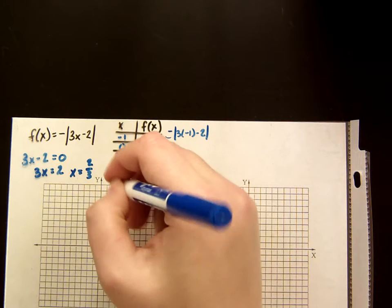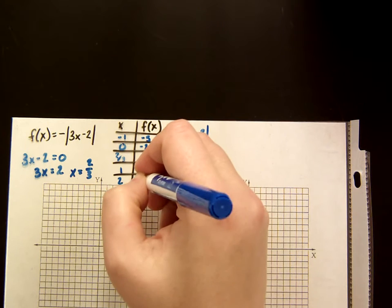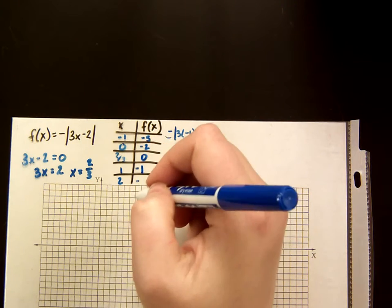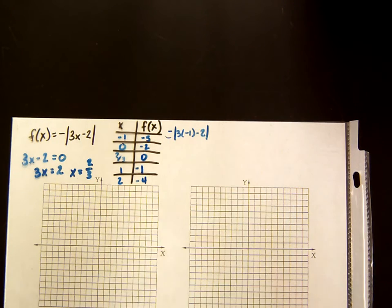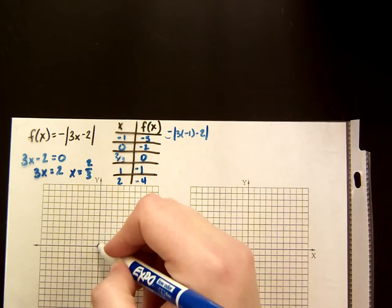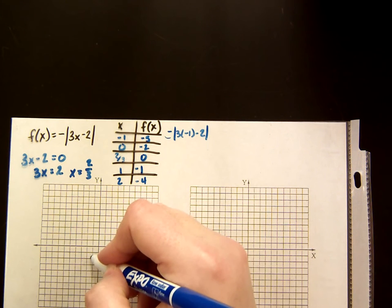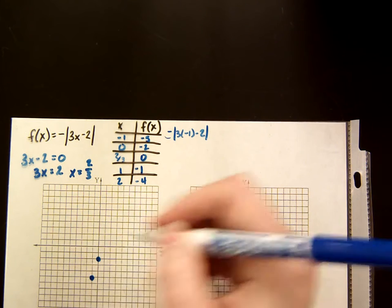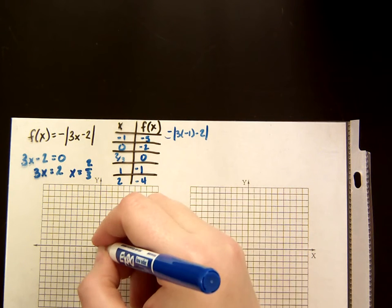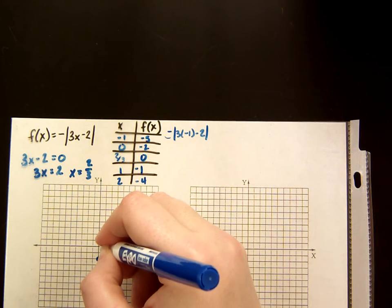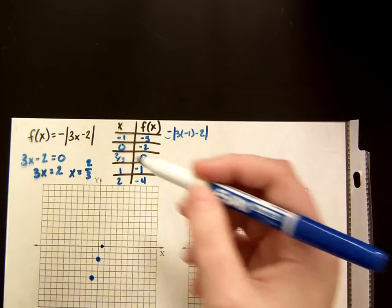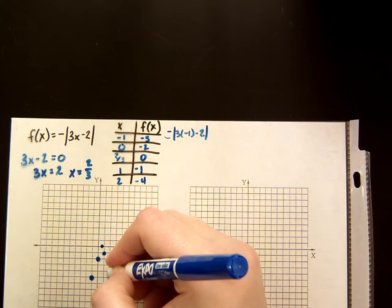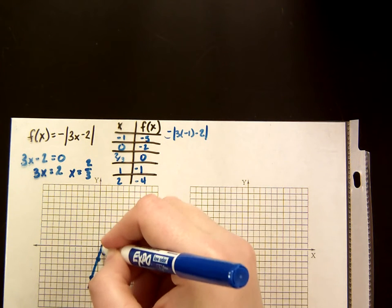Continuing to plug in my numbers — that should be a negative 1, so that will be negative 4. So when I graph this: (negative 1, negative 5), (0, negative 2), and for 2 thirds the y is 0 — I'll estimate since 2 thirds is not quite at 1. Then (1, negative 1) and (2, negative 4).